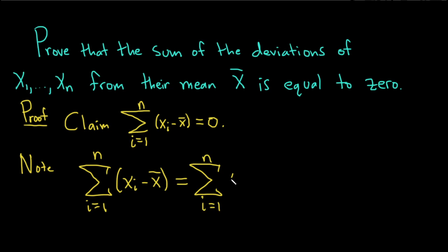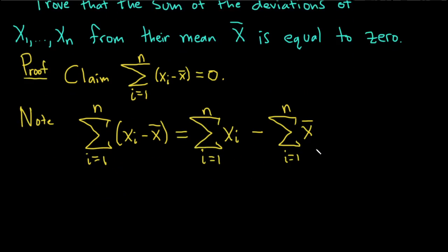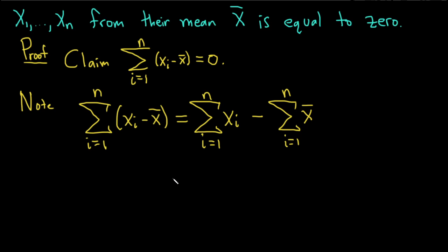n of the x i's minus the sum as i goes from 1 to n of x bar. Let's keep going. So this is equal to the sum as i runs from 1 to n of x sub i.